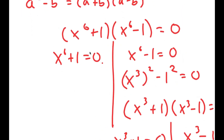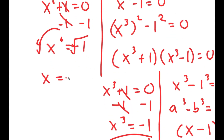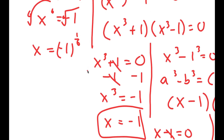Now for x to the power of 6 plus 1 equals 0, I'm going to subtract 1 on both sides. So x to the power of 6 is equal to negative 1, and if I take the 6th root I get x is equal to the 6th root of negative 1, which is equal to negative 1 to the power of 1 over 6.